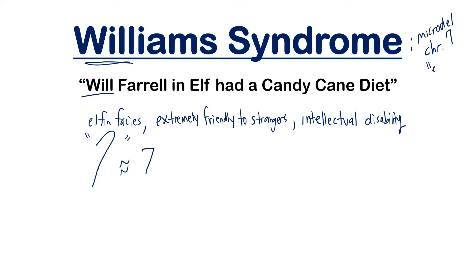Specifically, it's a microdeletion of the long arm of chromosome 7, and it just so happens that this is the spot on chromosome 7 where the elastin gene is located. That may be part of why some of the elfin features are present — you're altering the elastin. So we got chromosome 7 because the candy cane shape looks like the number seven.